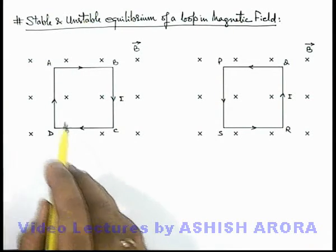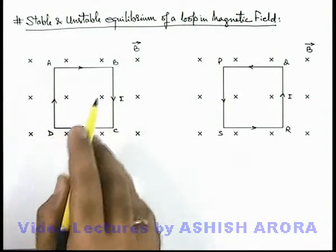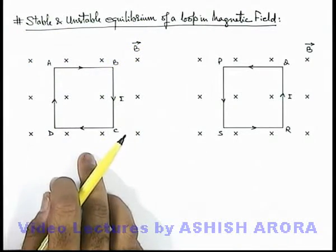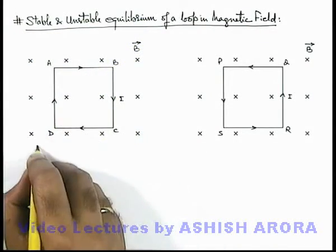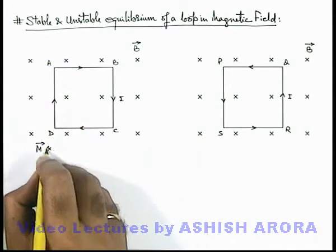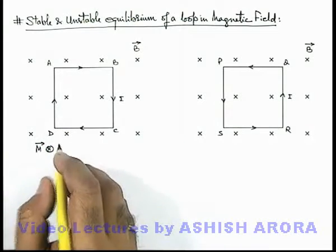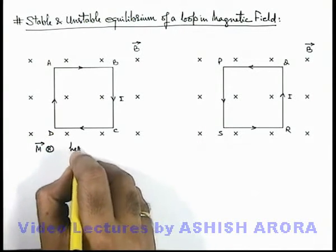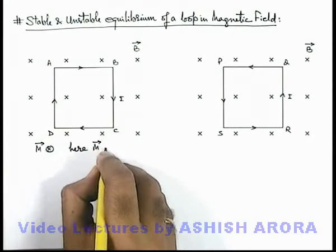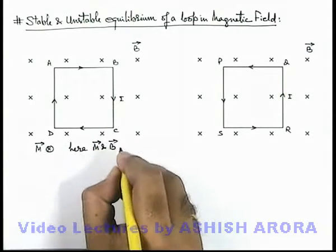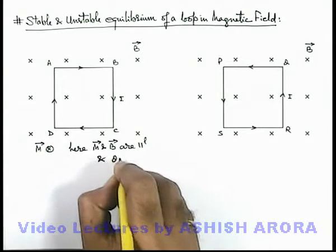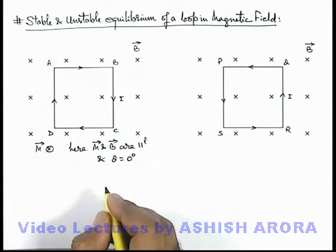In this first case, as per the direction of this current-carrying loop, its magnetic moment can be taken in the inward direction. So the m vector, which we define as current multiplied by the enclosed area, exists in the inward direction — that is, parallel to the direction of magnetic field B. So we write that m vector and B vector are parallel, and the angle between them can be taken as zero degrees.